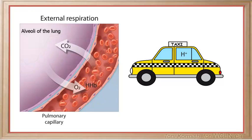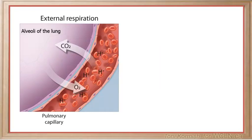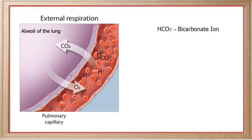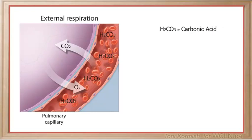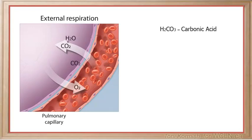If hydrogen ions continue to be released in the capillaries around the lungs, the tissue would become highly acidic. The hydrogen ions are buffered by a molecule called the bicarbonate ion. When hydrogen ions bind to the bicarbonate ion, a molecule called carbonic acid is temporarily formed. Carbonic acid quickly breaks down into carbon dioxide and water, both of which diffuse into the alveoli and are exhaled.